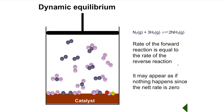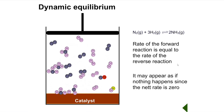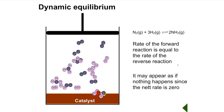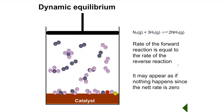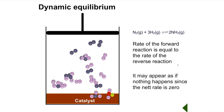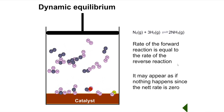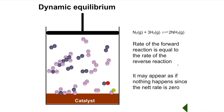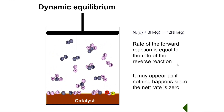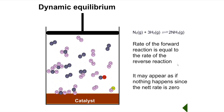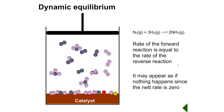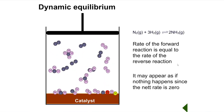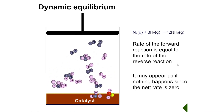A reversible reaction which occurs in a closed system can reach dynamic equilibrium — this happens in the Haber process. When dynamic equilibrium has been reached, the rates of the forward and reverse reactions are equal to one another. As a result, the amounts of reactants and products do not change over time. This might make it seem as if nothing is happening; however, the equilibrium is dynamic. Dynamic means moving or changing — the atoms change places with one another, sometimes being part of N2 and H2 molecules, and sometimes being part of NH3 molecules.